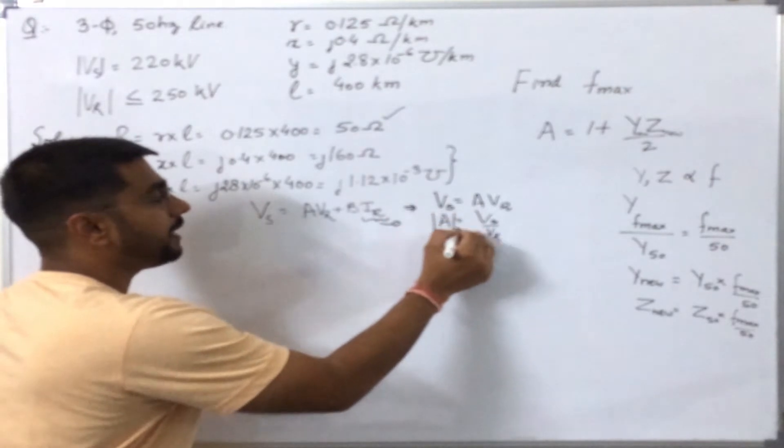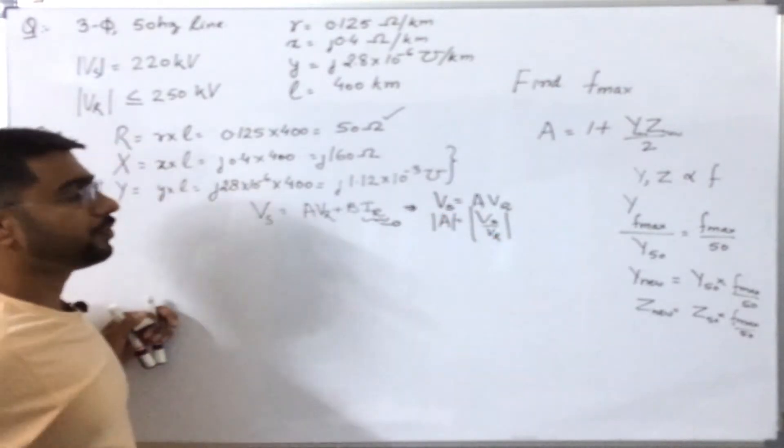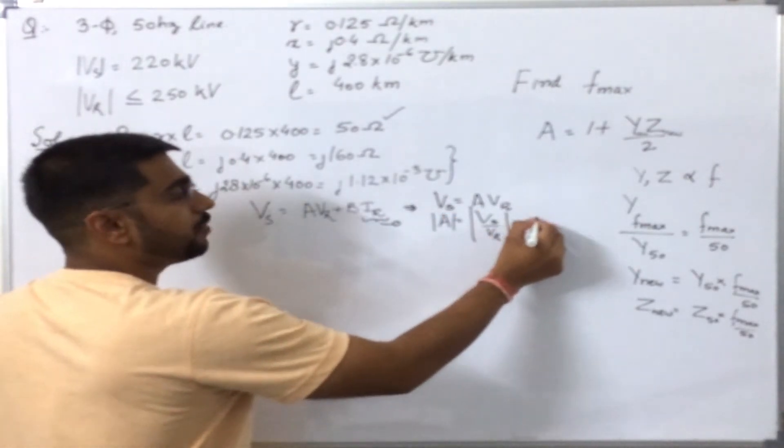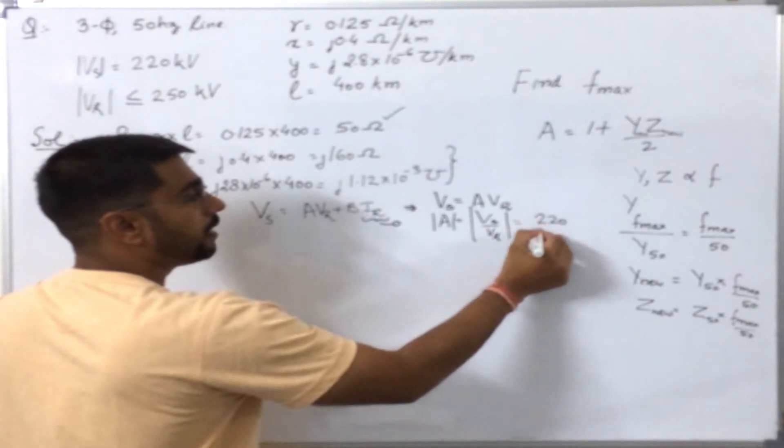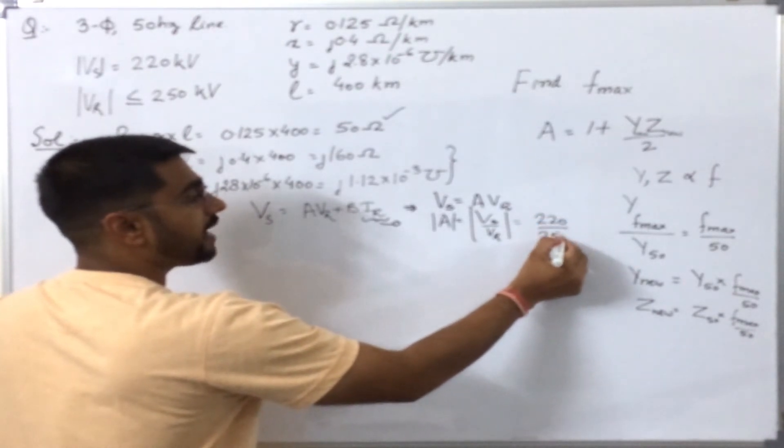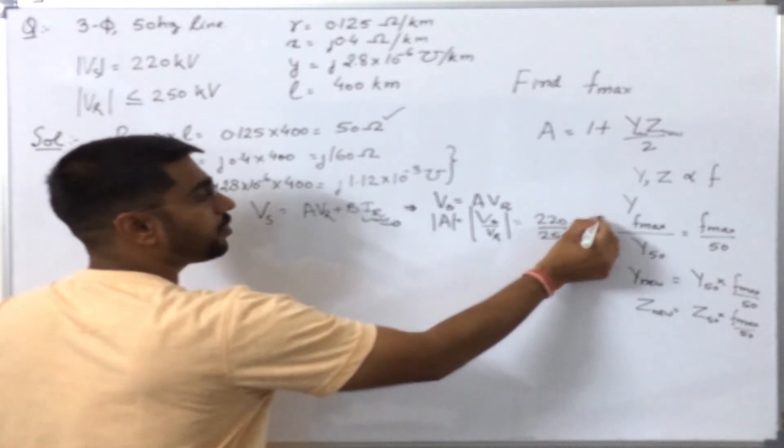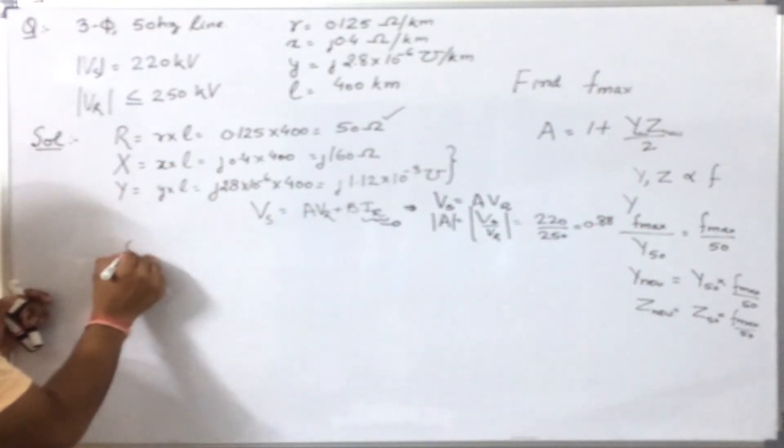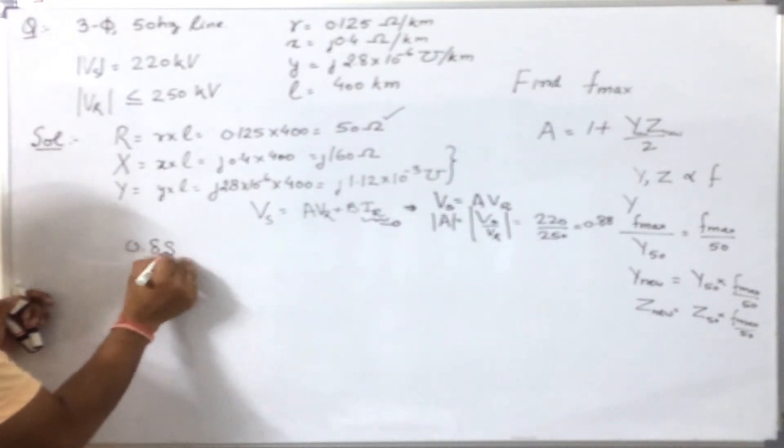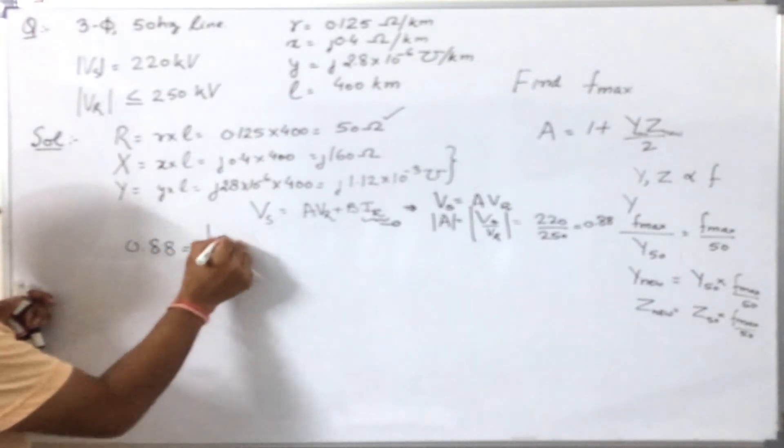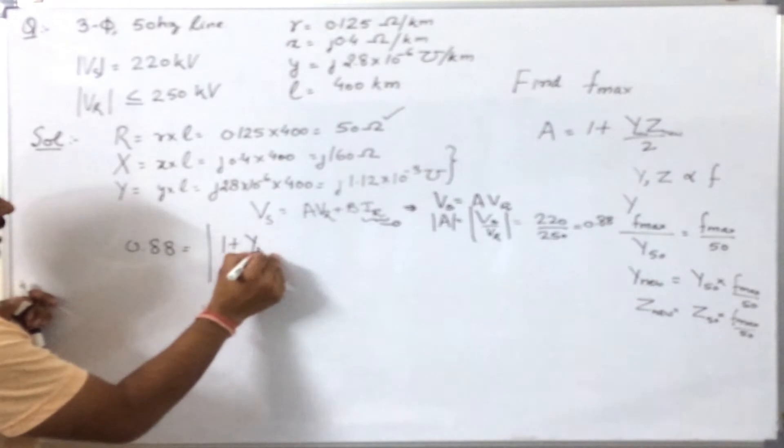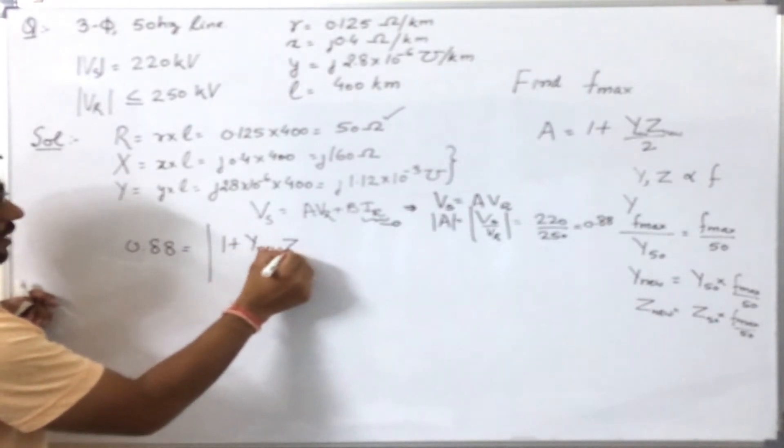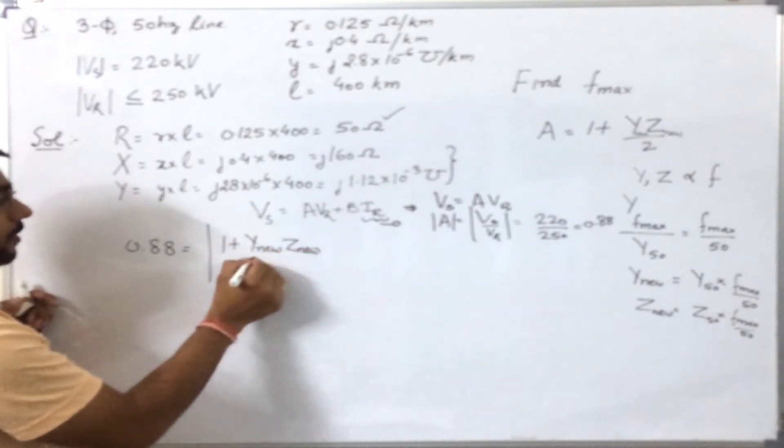So it implies Vs equals A times Vr, or A is simply Vs over Vr, and its magnitude is simply the ratio of magnitudes. By putting the values, I will get the magnitude of A equals 0.88. Now, putting this in the formula,